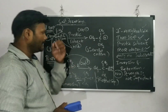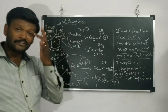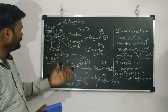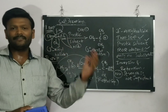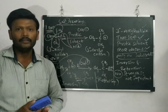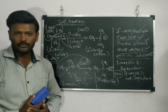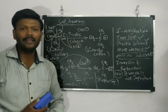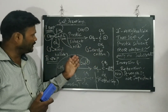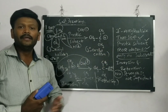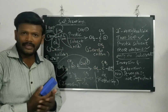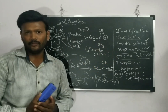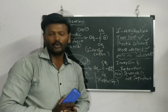That's all about the SN1 reaction: 3rd degree alkyl halide, 2-step process, protic solvent, rate depends only on substrate, and both inversion and retention of configuration are possible. In my next class, I will explain the SN2 reaction. Thank you so much for watching — please subscribe to my channel and share my video.